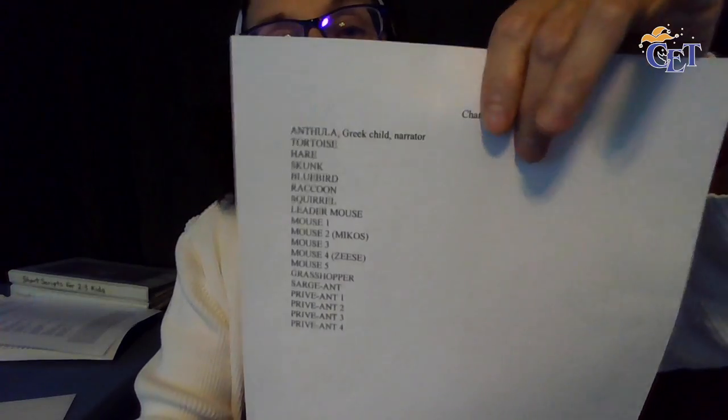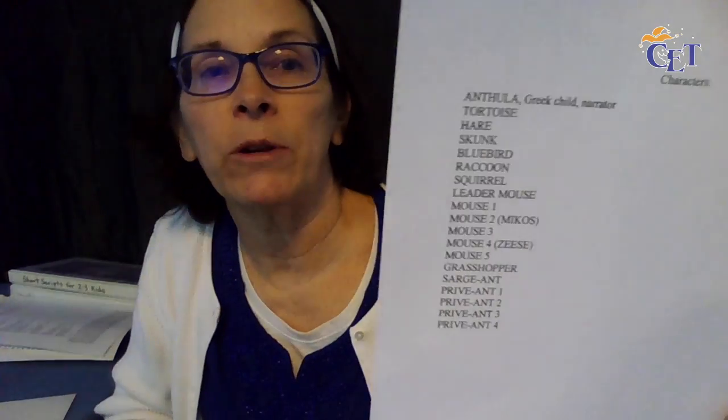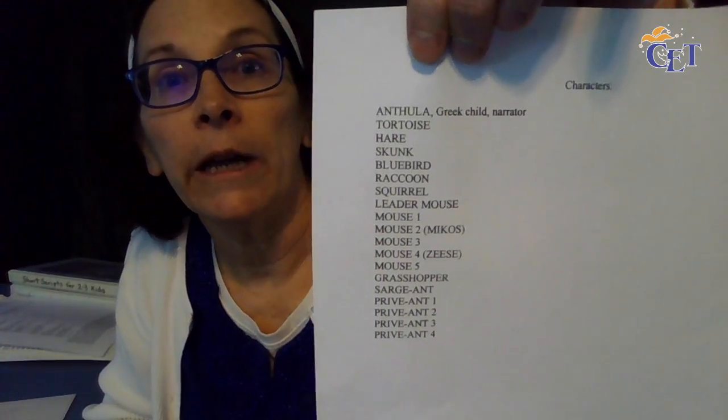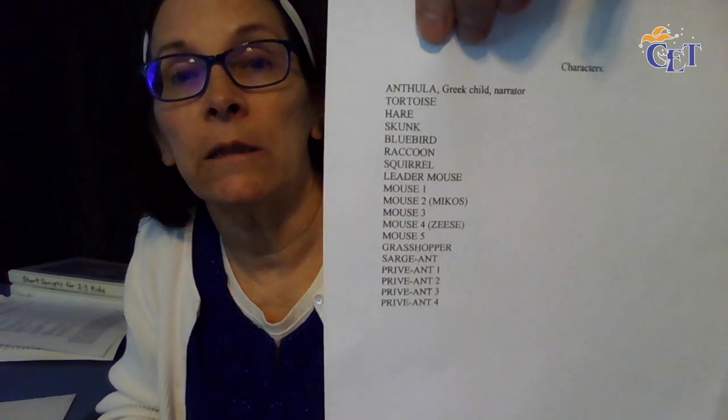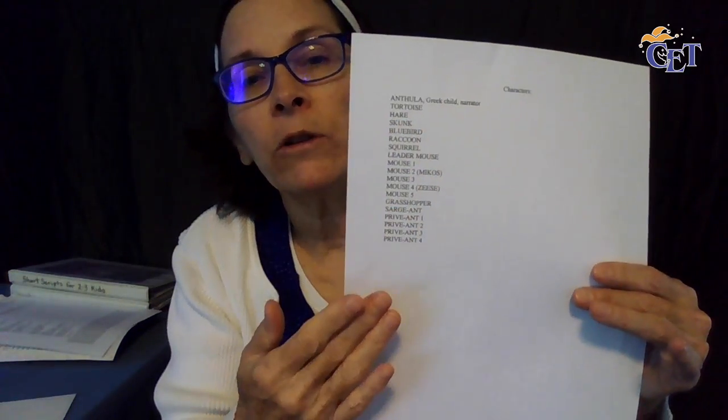Characters. How do you do characters? Characters are on their own page. In this one, I have 'characters' centered with a colon, and then I have them all listed — all in capital letters. You'll notice that on this particular one I make sure that Anthula is mentioned as far as who she is, because otherwise what's an Anthula? She's a Greek child and she is the narrator as well — she's the one who ties all three stories together. The rest of them you don't need further information: you know what a tortoise is, a hare, a skunk, a bluebird, a rabbit. So I put all those characters there.